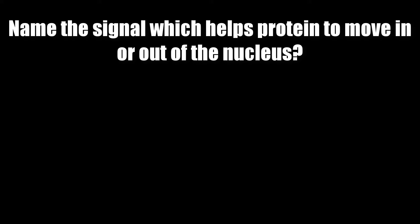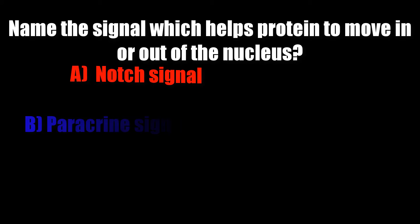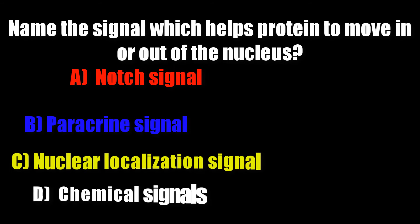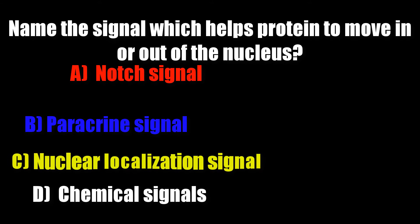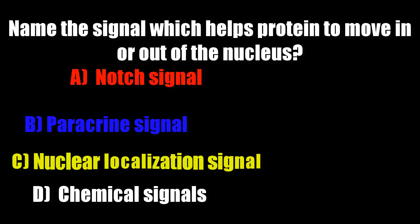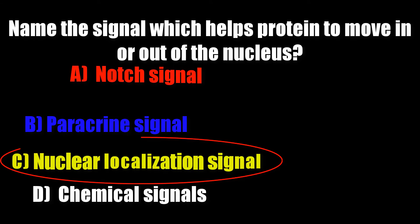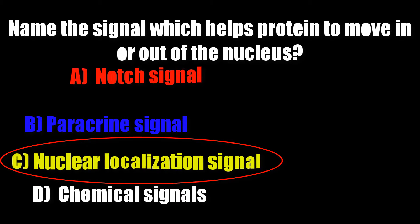Name the signal which helps protein to move in or out of the nucleus. Options: nudge signal, paracrine signal, nuclear localization signal, chemical signal. Correct answer is nuclear localization signal.